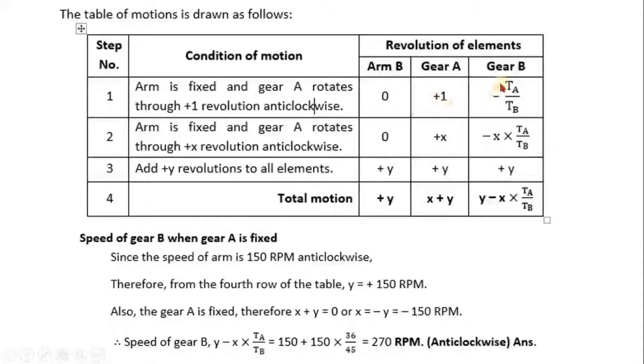So this will be 0 for arm A, gear A is +1 and gear B is -TA/TB. Arm is fixed and gear A rotates through +x revolution anticlockwise. So arm B is 0, gear A is +x and gear B is -x × TA/TB.